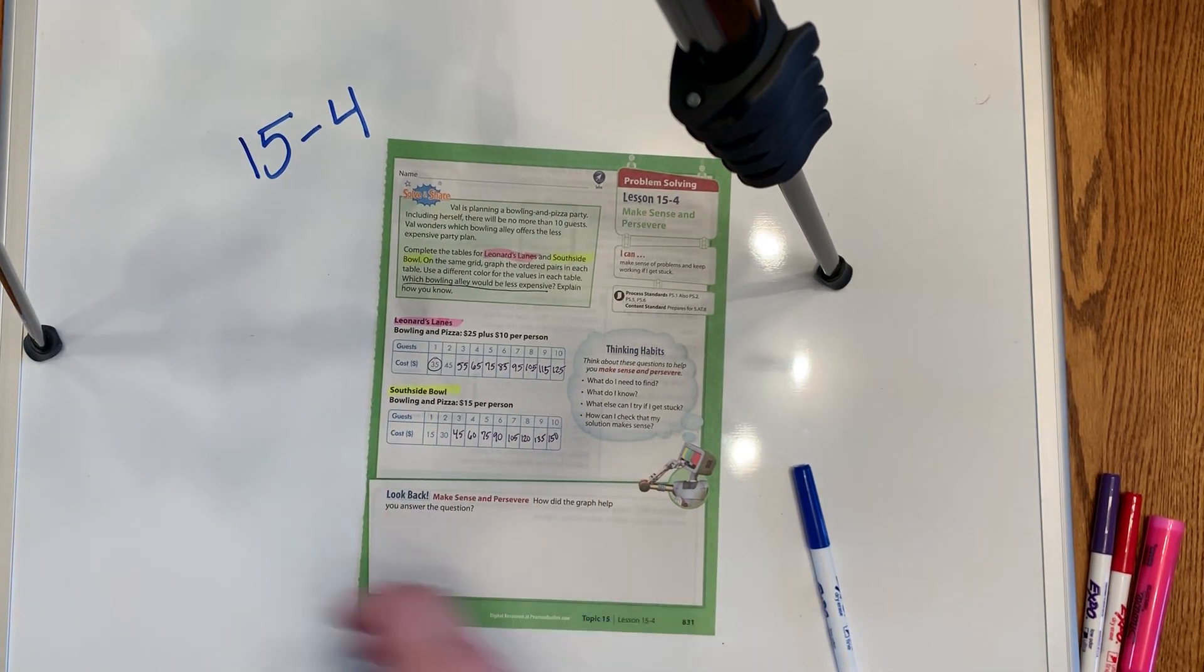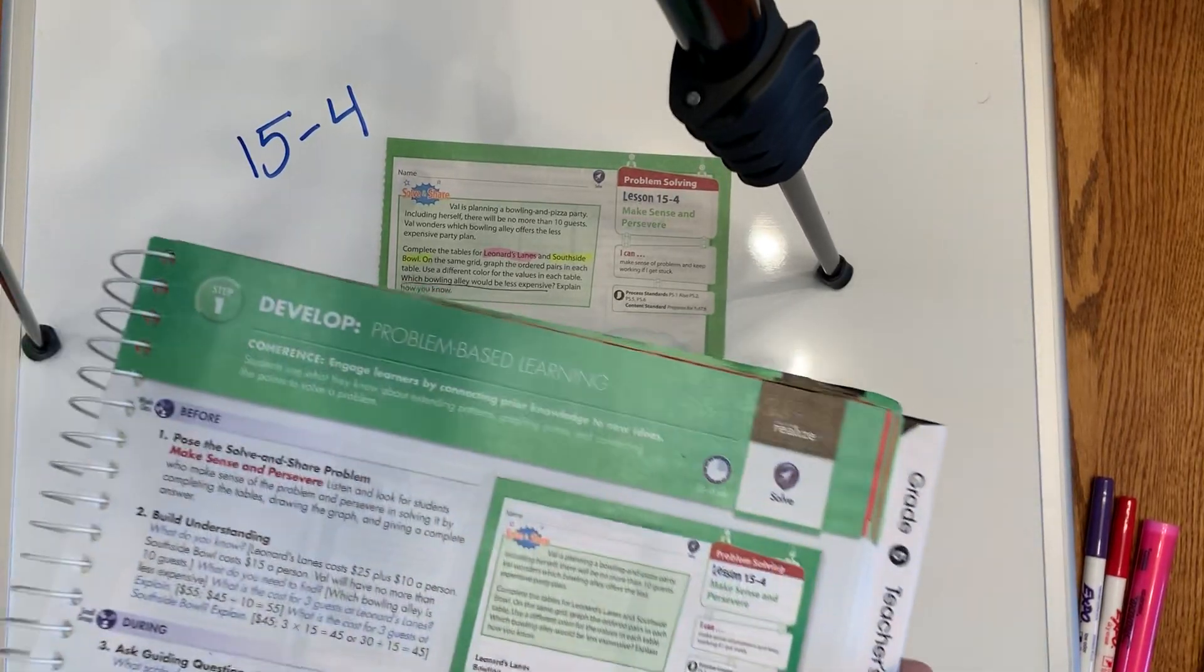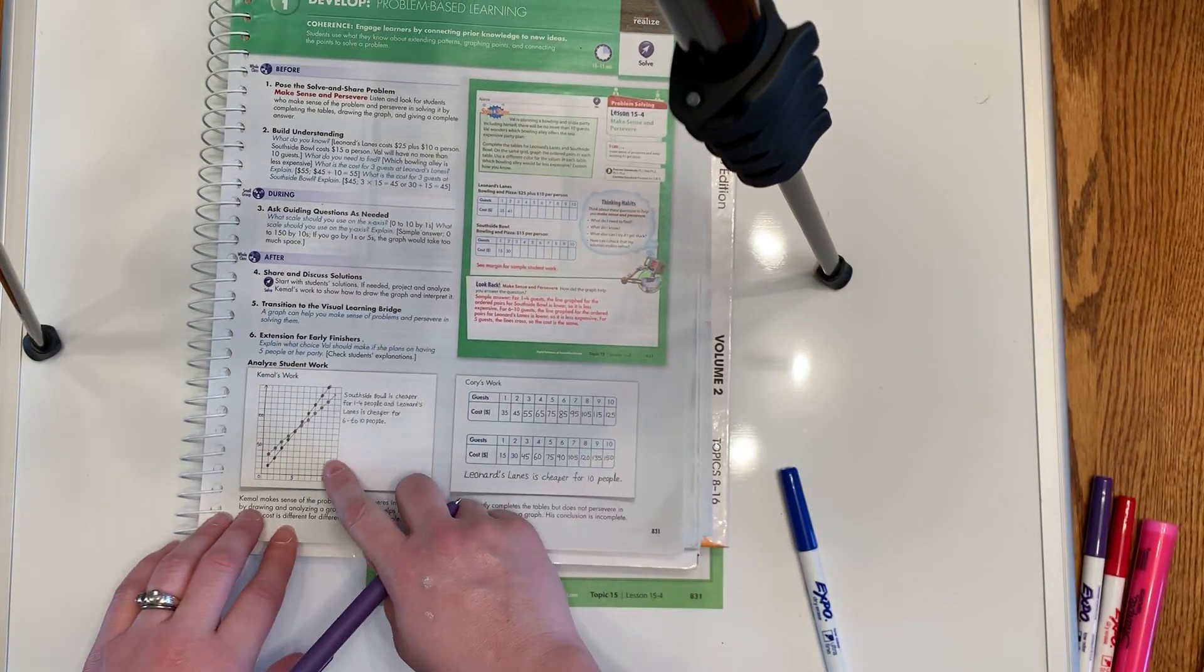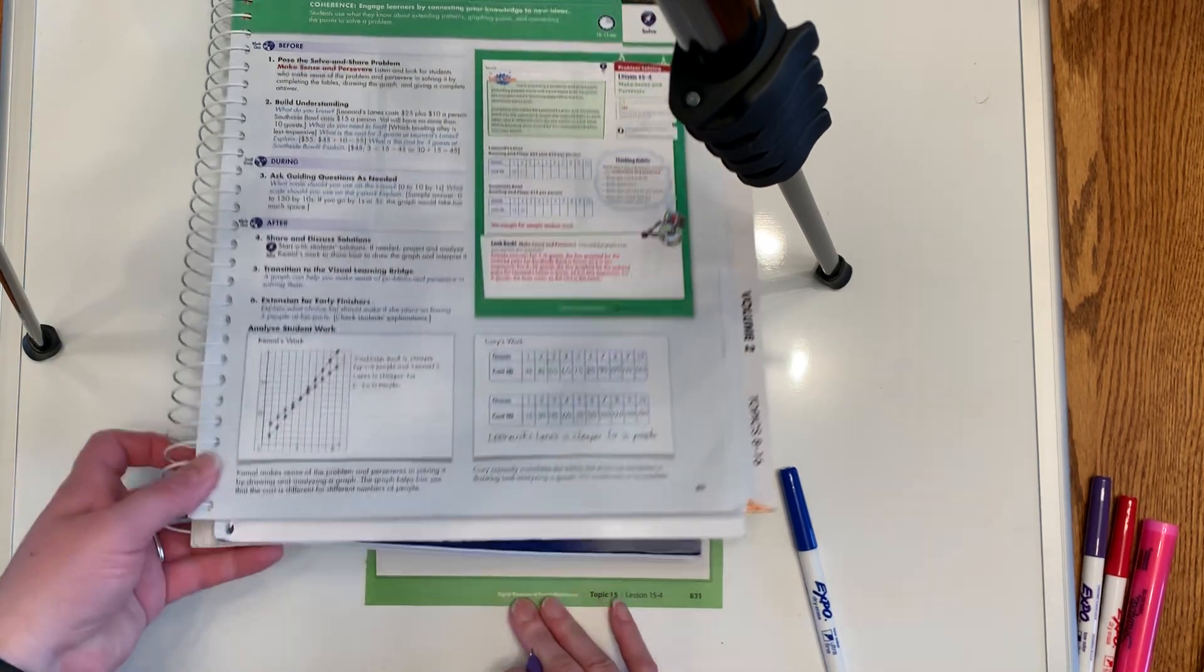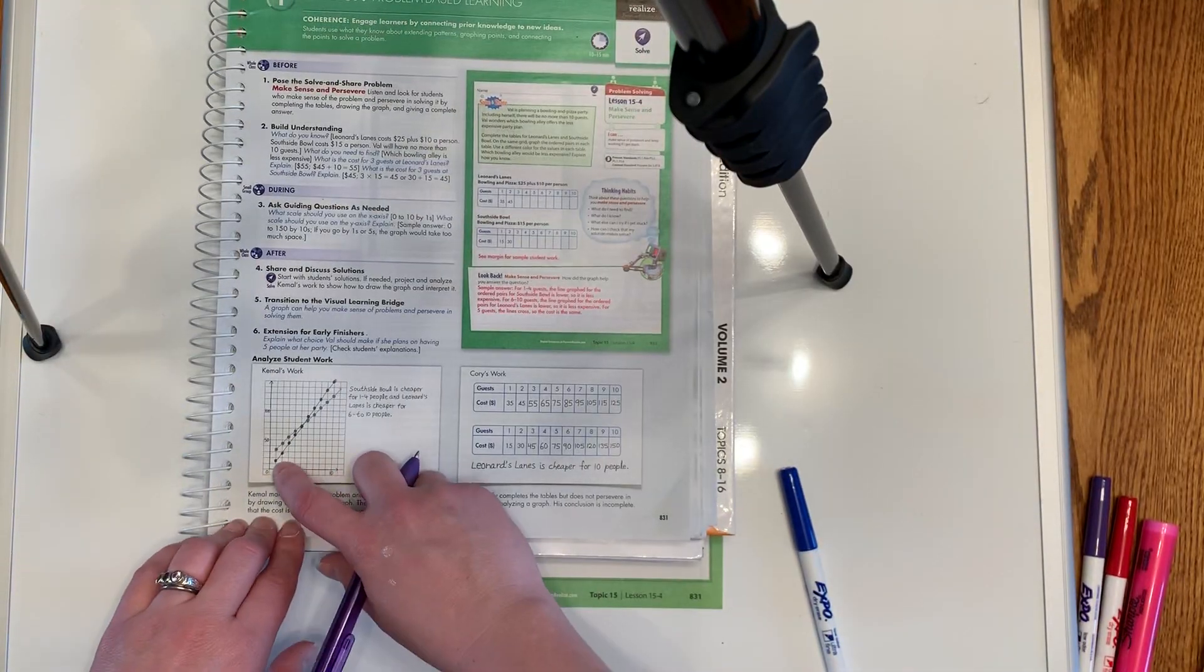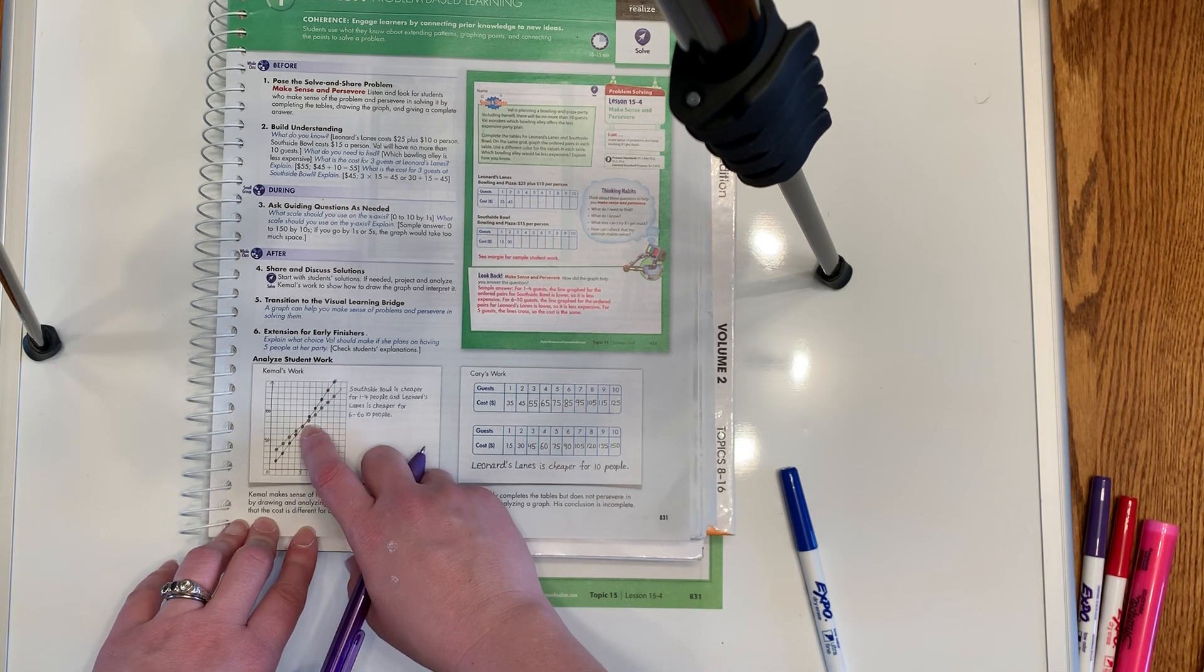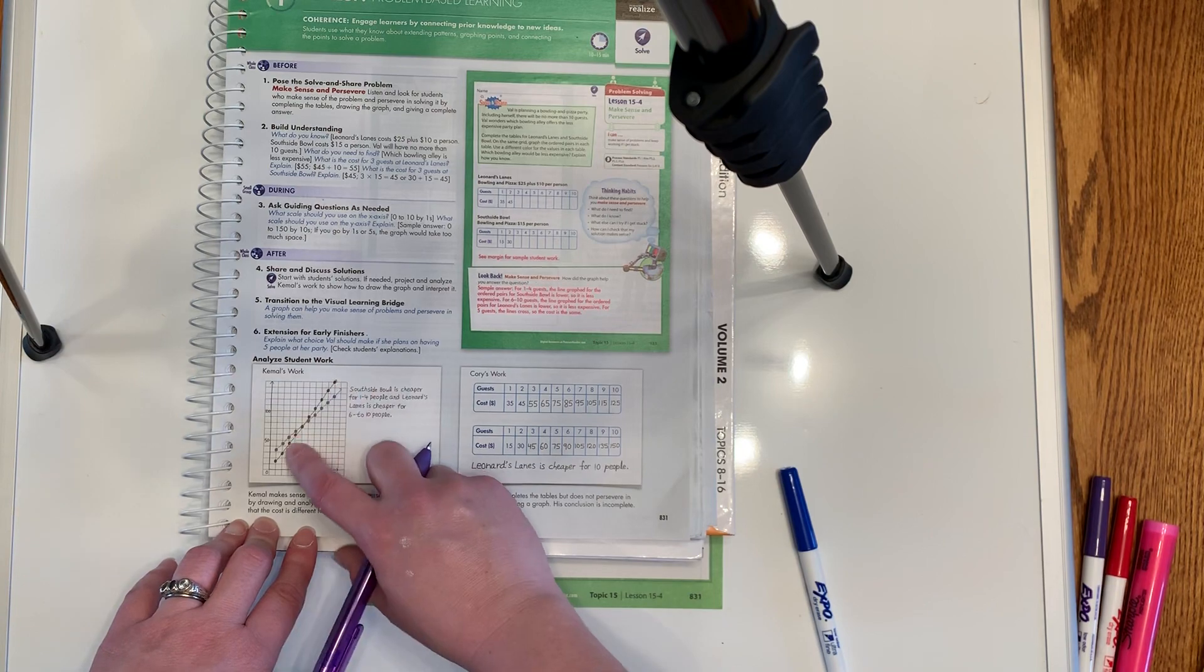And if we wanted to make a chart of this, this is an example from the teacher's manual. You can kind of see that they did go ahead and chart this. And the one does start off, the South Side Bowl, I think it is, yeah, South Side Bowl does start off cheaper because it's only $15 per person. But it ends up being more expensive overall.